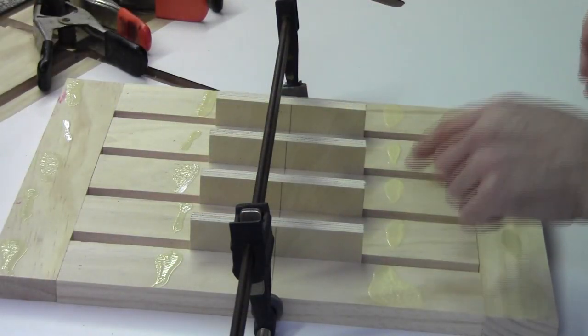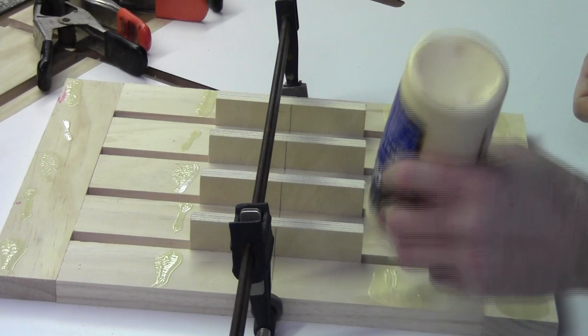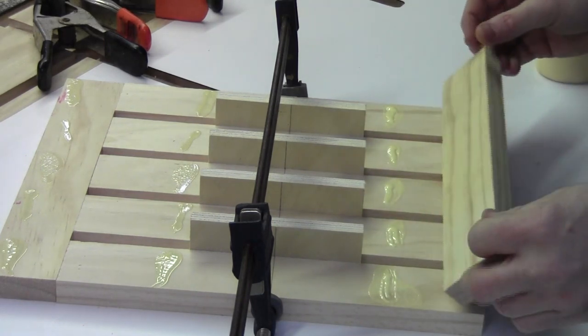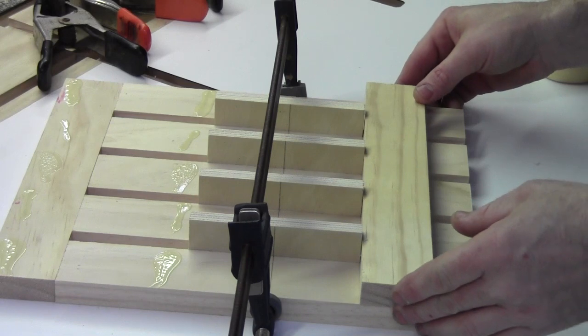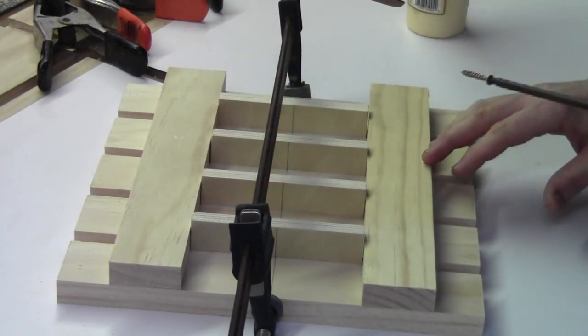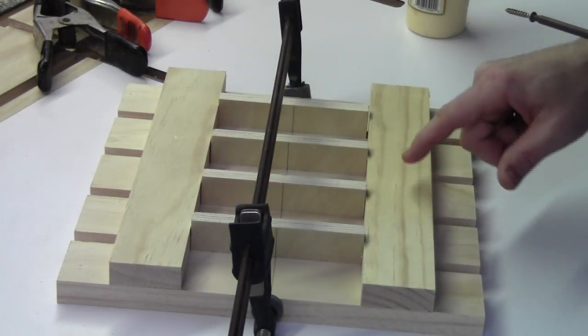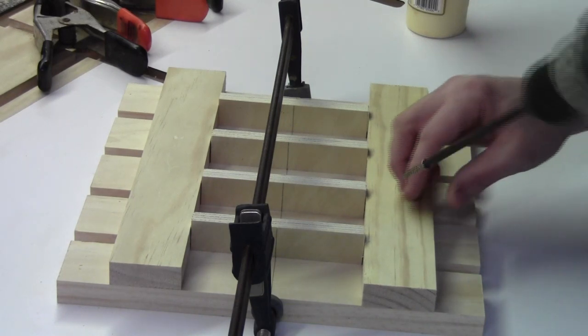With everything in line, go ahead and add some strips of glue and take your two remaining pieces and butt them up against your spacers and flush with one end. After the glue is added, go ahead and add screws to the three center pieces.